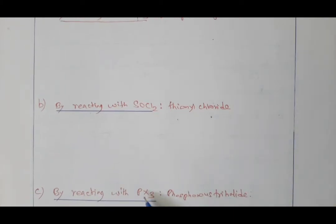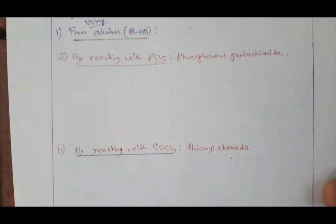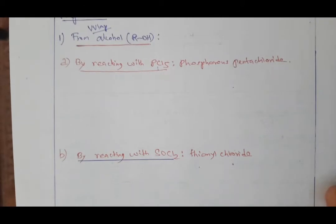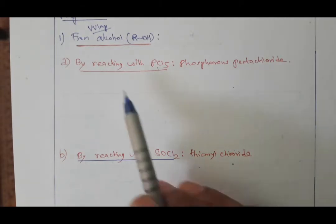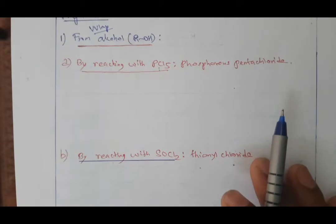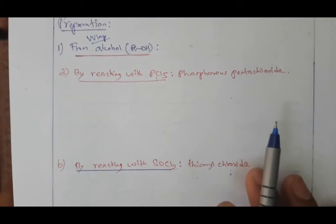PX3 is called phosphorus trihalide. If you put chlorine it is phosphorus trichloride; bromine gives phosphorus tribromide; iodine gives phosphorus triiodide. All three types of preparation of alkyl halide from alcohol are important.